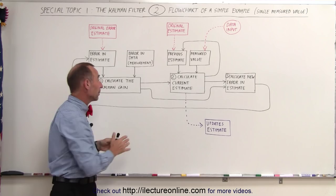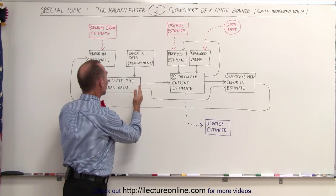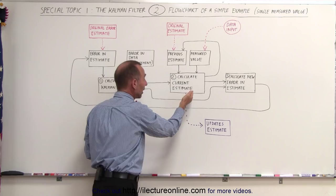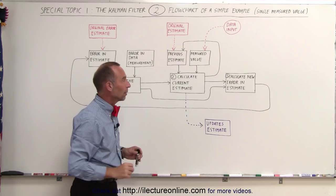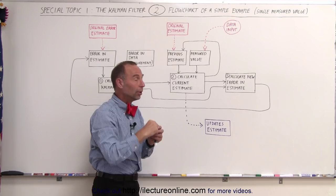Secondly, the Kalman gain feeds into the calculation of the current estimate. Depending upon what the gain is, the adjustment to the previous estimate to come up with a new estimate depends, of course, upon the gain. The size of the gain also depends upon the previous estimate, so whatever we calculate now, on the next iteration when new data comes in, we use that previous estimate to recalculate the new estimate. It always feeds back in on itself.